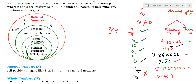In decimal form also, we can identify whether something is a rational number or not. There are two things to understand: recurring and terminating. You have to memorize two letters — RT in rational number. R for recurring, T for terminating.